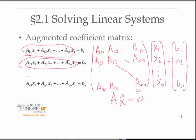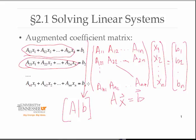In using the term augmented coefficient matrix, it's often easier to represent all the values we're working with by taking the matrix A and appending the right-hand side b. This augmented coefficient matrix describes the linear system, where x1 through xn is implied. This form is simply the matrix A with a straight line, and then we append the B's — this is called the augmented coefficient matrix.